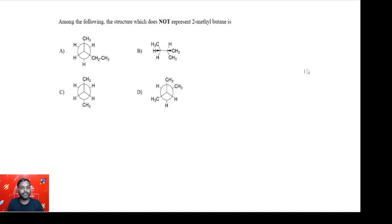The next question: among the following, the structure which does not represent 2-methylbutane. It's a very simple problem. Basically they have given this Newman projection, and if you just convert the Newman projection into normal formula normal structure, you will realize then you will have to find out which one is not representing 2-methylbutane.